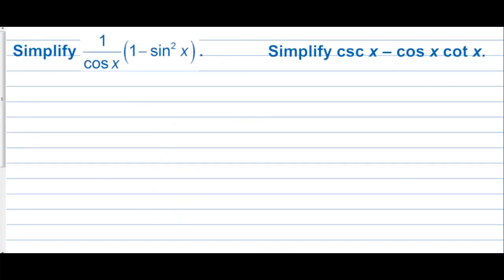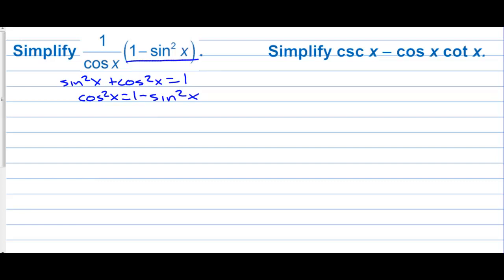Simplify one over cosine of x times one minus sine squared. We know that sine squared x plus cosine squared x equals one, so cosine squared x equals one minus sine squared x. So instead of one minus sine squared, we can write cosine squared. This becomes cosine squared over cosine of x. One of those cancels, and we're left with cosine of x.